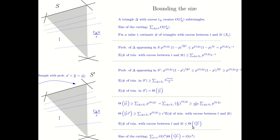Now we can go back to the size of the cutting. The size of the cutting is a sum over the excess of every triangle to the power 3, written as a sum from T=1 counting triangles with excess between T and 2T multiplied by their expected number. The e^T function in the denominator dominates the polynomial values of T, so this summation is bounded by r², completing the proof that there exist 1/r cuttings of size r².